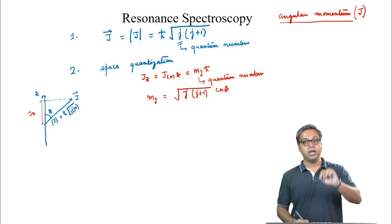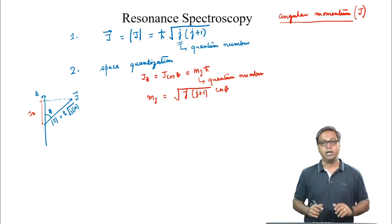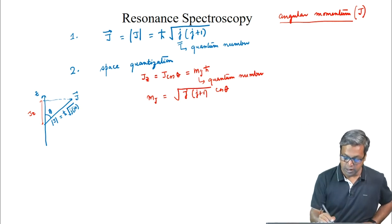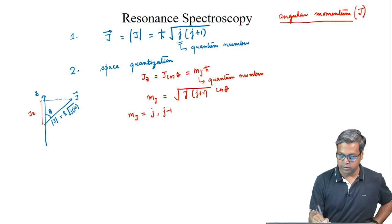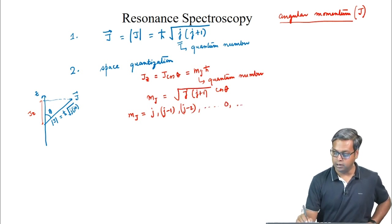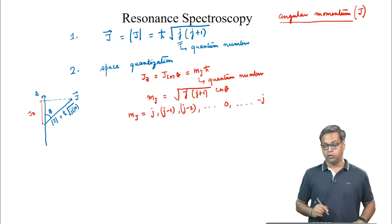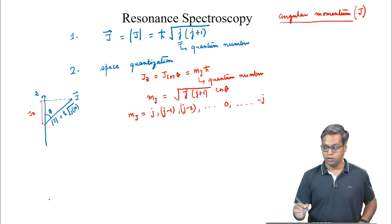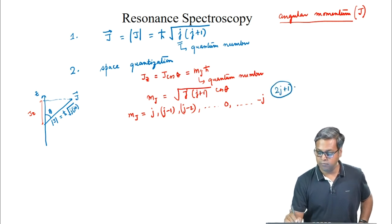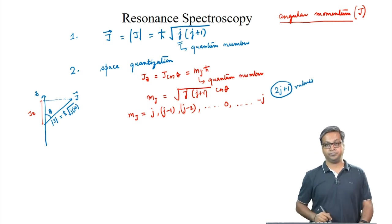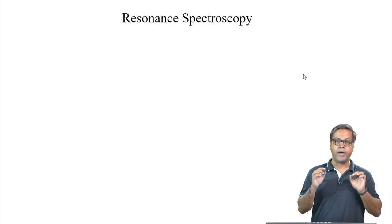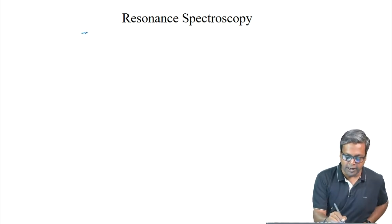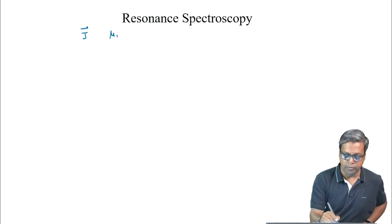From this relation it follows that the m_J quantum number can take values: J, J−1, J−2, ... , 0, ..., −J. In total there can be 2J+1 values of m_J. When a particle has angular momentum J and magnetic moment mu_J, the relation is mu_J = gamma × J, where gamma is the gyromagnetic ratio.